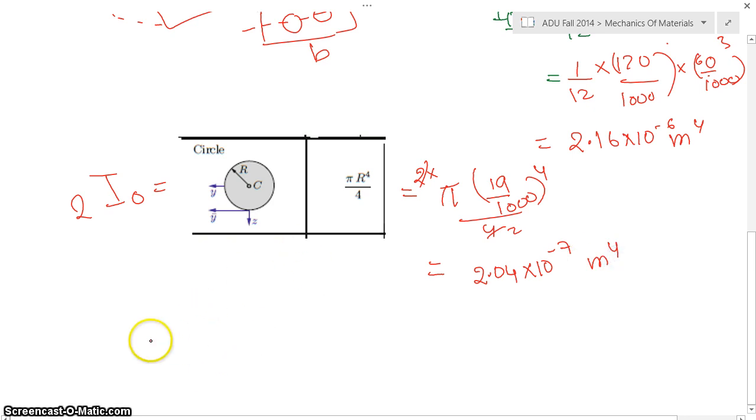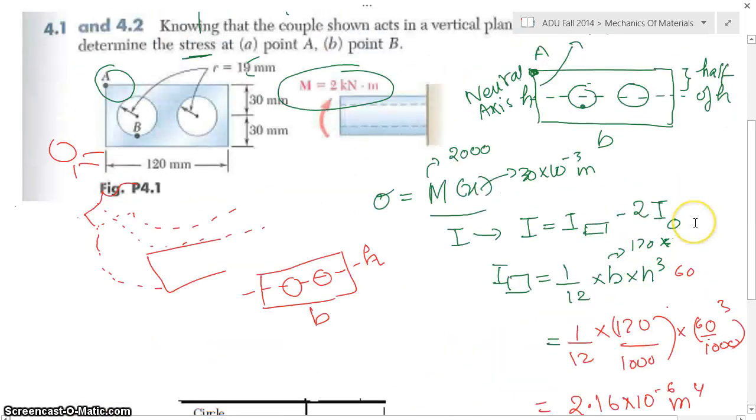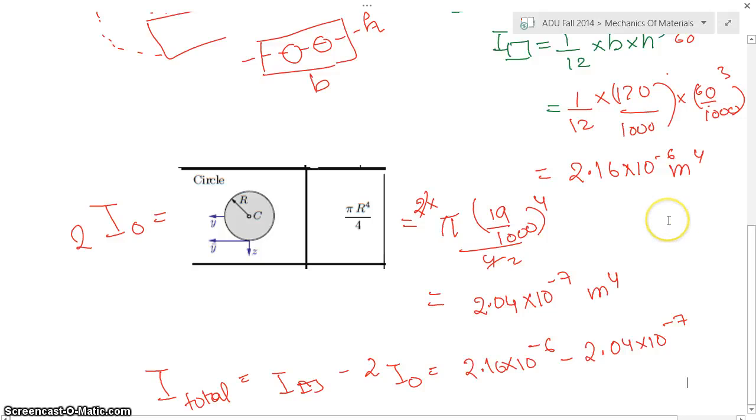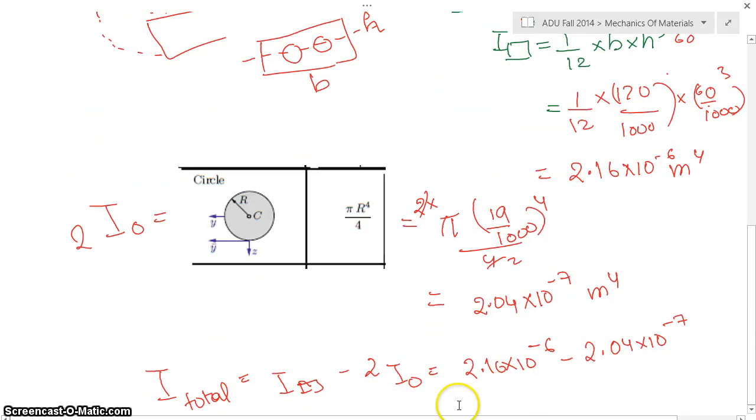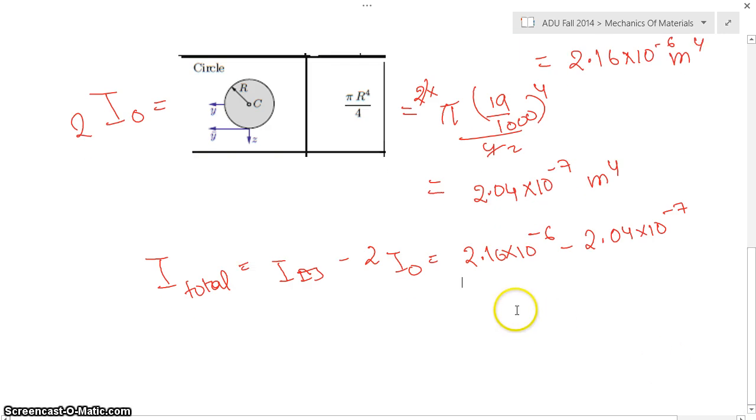Now I want to find the total I. I total, which will be I of rectangle minus 2 I of circle, which gives me 2.16 times 10 to the power minus 6 minus 2.04 times 10 to the power minus 7. That gives 1.96 times 10 to the power minus 6.